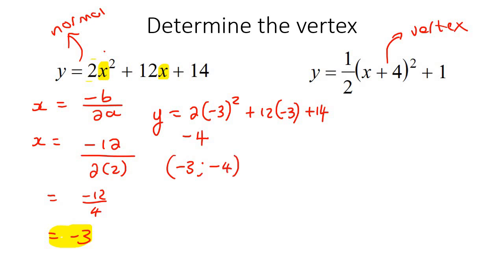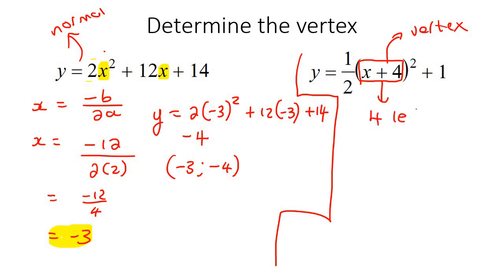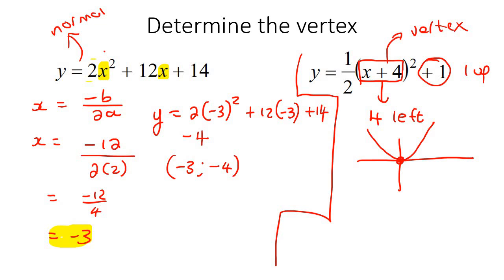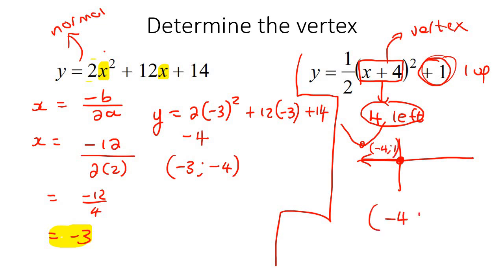Well done if you got that one correct. Now let's try the example in vertex form — it's very easy because the vertex can be read straight from the equation. Remember: the part in the square bracket moves it left or right — plus means left, minus means right — and the outside constant moves it up or down. So the original vertex starts at (0, 0), then it gets moved four places to the left and one place up, ending up with an x value of negative 4 and a y value of 1. Your vertex is at (negative 4, 1). No calculations needed when it's already in vertex form.